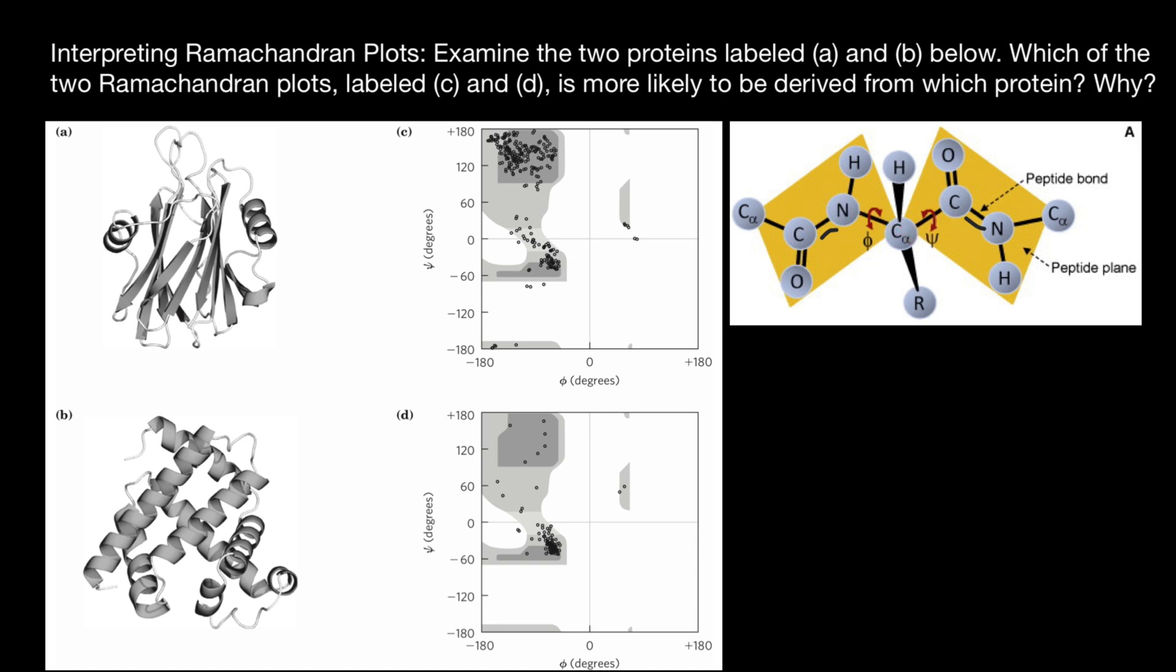On one side, we have here phi degrees and psi degrees on the other side. Zero and zero comes here in the middle, dividing the square into four quadrants.